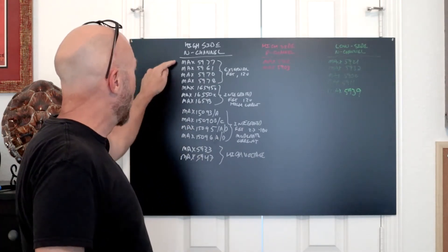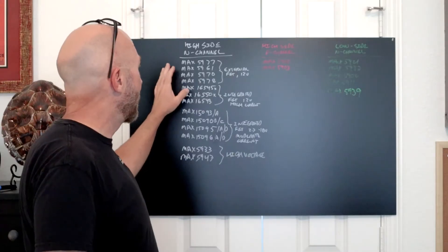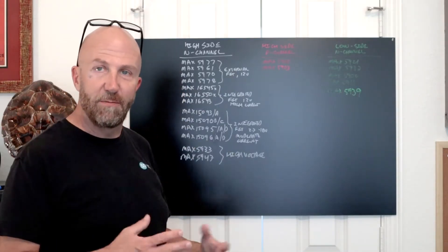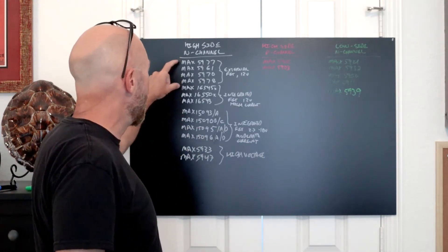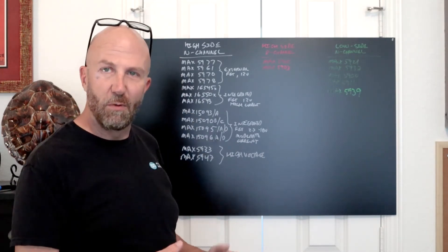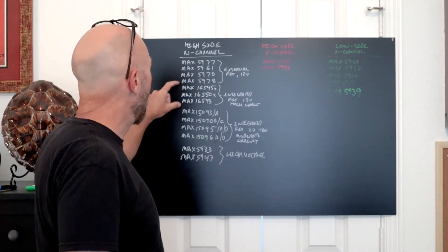For high side N channel, we have the MAX5977, MAX5961, MAX5970, and MAX5978, all of which include external drive for high side N channel MOSFET and digital telemetry features. Those are suitable for a 12 volt rail, although you can do anywhere from 2.7 up to 12 volts with those parts.